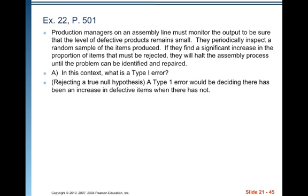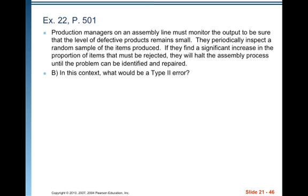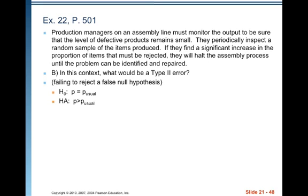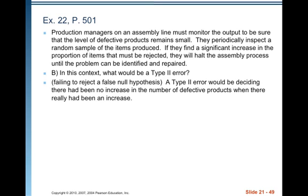Type 2 error is failing to reject a false null hypothesis. So a Type 2 error would be deciding there has been no increase in defective items when there really has been an increase. The consequence is that you keep producing items with a greater proportion of defectives than acceptable, resulting in a lot of unhappy customers and too many faulty items produced.